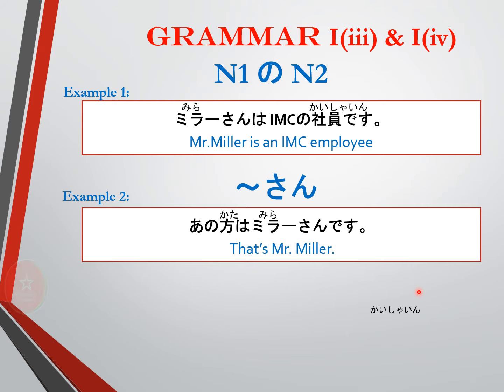The next particle is no. No is a noun modifier that indicates something belongs to something — it tells you something about a noun. For example, IMC no kaishain desu means 'IMC employee' — IMC no kaishain desu.